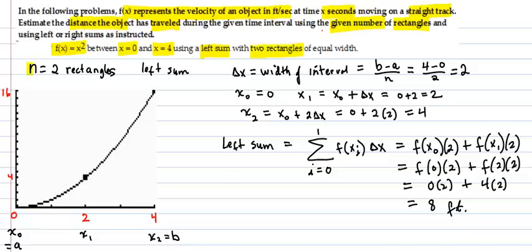Okay, so we have our two rectangles. It's a left sum picture. Our interval width is, well, we want to have two rectangles.